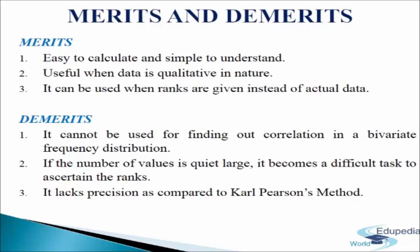Now we discuss the merits and demerits of rank correlation. Merits: First, this method is easy to calculate and simple to understand compared to Karl Pearson's method — it takes less time in computation. Second, the rank method is very useful when the data is qualitative in nature, such as honesty, beauty, intelligence, or voice quality, where ranks are assigned to items. Third, this is the only method that can be used when ranks are given but not the actual data. Fourth, when actual values are given instead of ranks, this method can provide a rough idea about the degree of correlation.